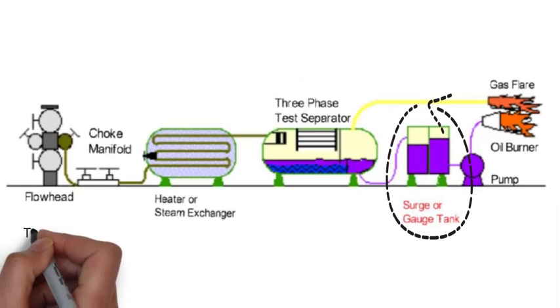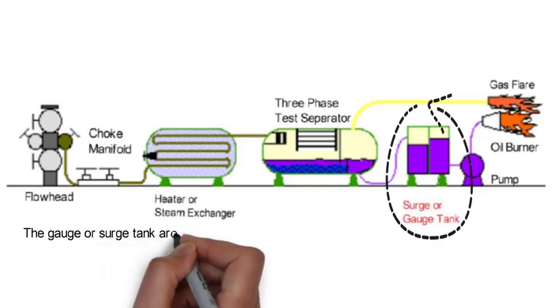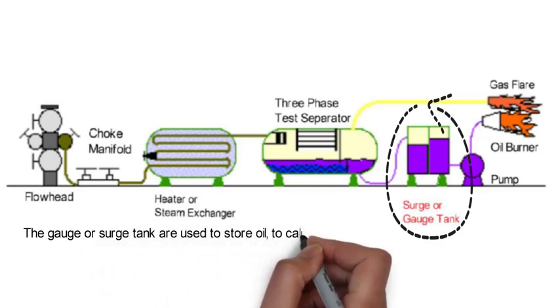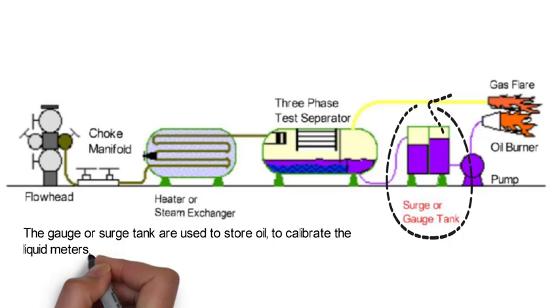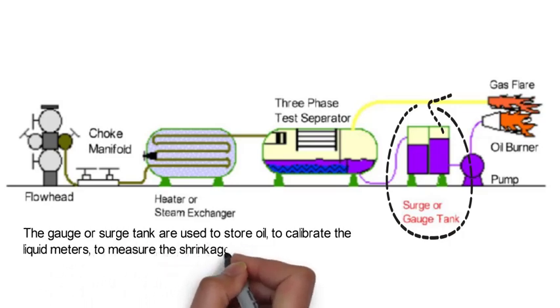The gauge or surge tank are used to store oil, to calibrate the liquid meters, to measure the shrinkage and low liquid flow rate.